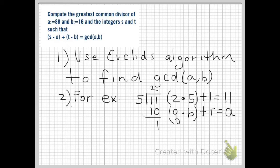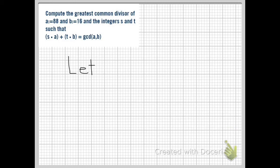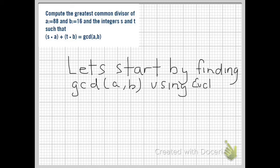It's this equation q times b plus r equals a that we're going to use and that we're going to rearrange to look like s times a plus t times b equals GCD(a,b). So let's start by finding the GCD of a,b using Euclid's algorithm.